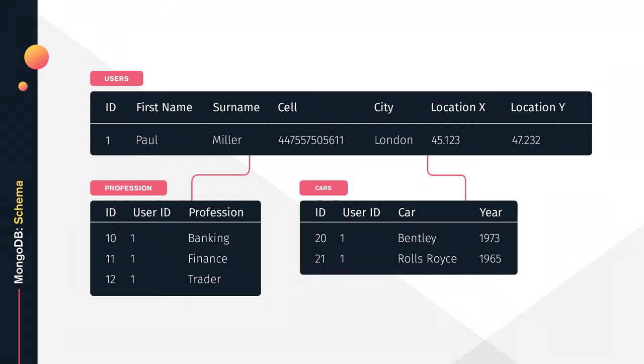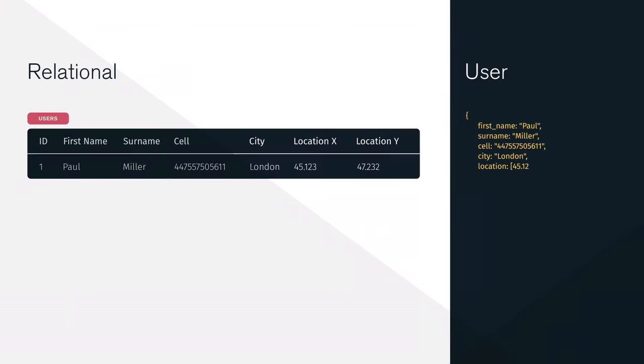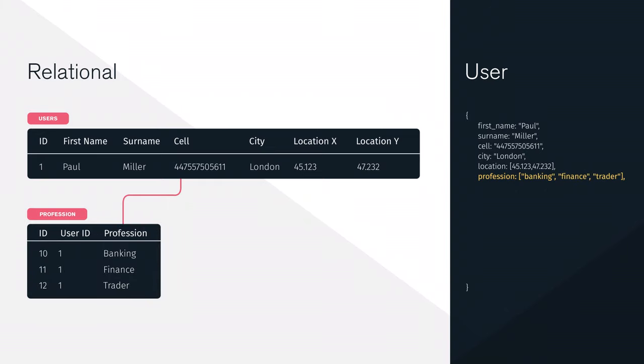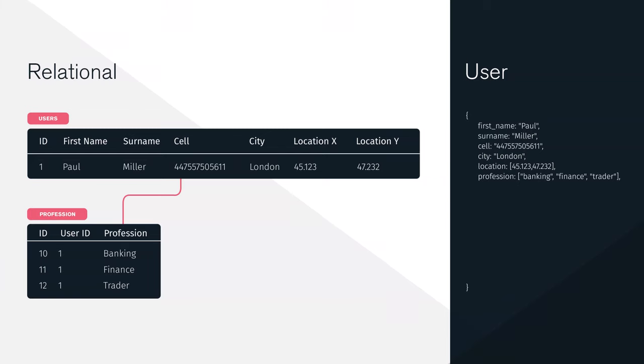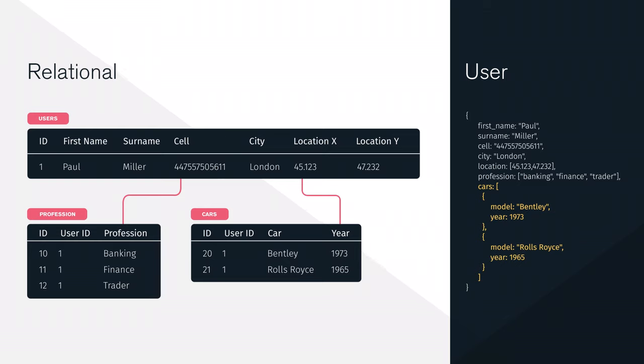Let's take that user model we were working with in a relational table and convert it over to a MongoDB document. That first user table has a bunch of simple data that can just be reflected as key-value pairs in a MongoDB document. The professions and cars table is a little bit different — that's hard to do in rows and columns, but super easy with MongoDB documents. A user can have multiple professions, and we can just use an array of professions and embed that directly within the user document. Similarly with the cars table, we can use an array of objects and embed that directly. We have all the data in one place, no complex time-consuming joins — just pull it all from one document, super fast and performant and scalable.